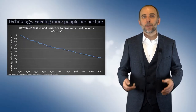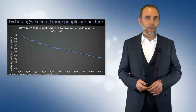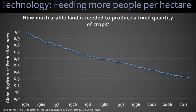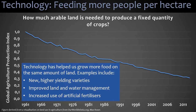That development and expansion of agriculture has been coupled with improvements in technology. We're now able to feed more people per hectare. This graph shows that in 1960 it needed one unit of land to produce one unit of food, but now in 2010–2020 we can produce the same amount of food on one third of the land. That technology would have included new higher-yielding varieties, improved land and water management, and the increased use of artificial fertilizers — all contributing to that improvement in land efficiency.